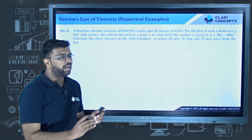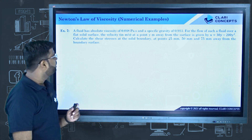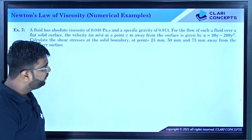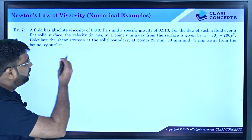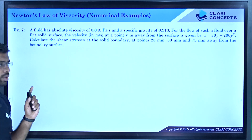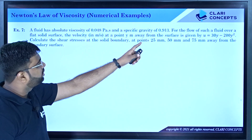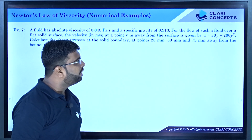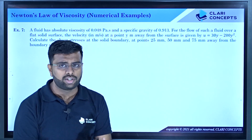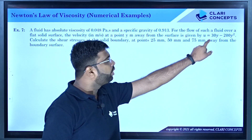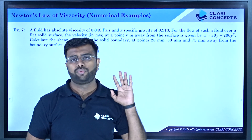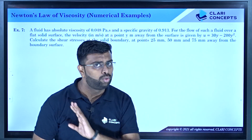This numerical is slightly different from what we have seen. A fluid has absolute viscosity of 0.048 pascal second, and a specific gravity of 0.913. For the flow of such fluid over a flat solid surface, the velocity at any point y meters away from the surface is given by u equals 30y minus 200y squared. Now, if you have a velocity distribution formula, note that y is the reference and this is not linear — the power of 2 has come, so this is no more a linear equation.